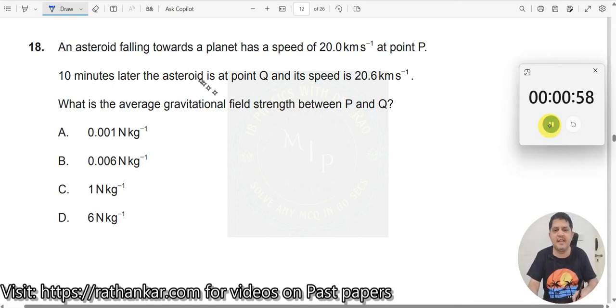Question number 18. An asteroid falling towards a planet has a speed of 20 kilometers per second at point P.